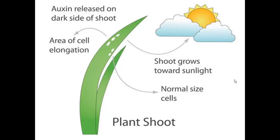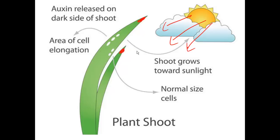Let's explain how this phototropism occurs. Here is our directional stimulus — the light — coming from this direction. It benefits the plant, and particularly the shoot of the plant, to grow towards the light so that it can position itself better for photosynthesis. At the tip, in the growing region of the shoot, we have a region which is able to detect light and release auxin. Auxin is a plant hormone.